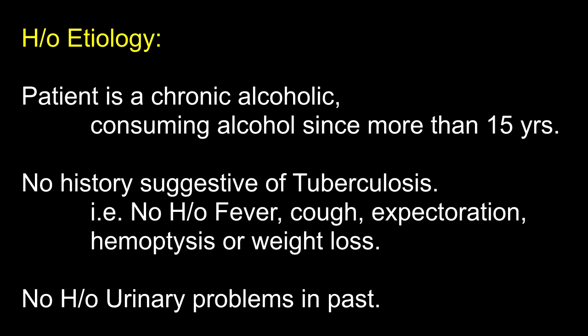Regarding history of etiology: the patient is a chronic alcoholic since more than 15 years. A chronic alcoholic may be defined as one who has been consuming at least 80 grams of alcohol per day for more than 10 years. Why do chronic alcoholics develop ascites? Chronic alcoholics develop cirrhosis of liver with periportal fibrosis due to repeated hepatitis, which leads to portal hypertension and ascites. Also, they are undernourished with hypoalbuminemia which contributes to the ascites.